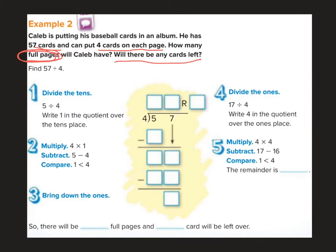So we're going to divide — I'll sing it again: divide, multiply, and subtract — bring it on down and bring it on back. Here we go. Five divided by four is one. Four times one is four. Subtract: five minus four is one. Bring down the seven.